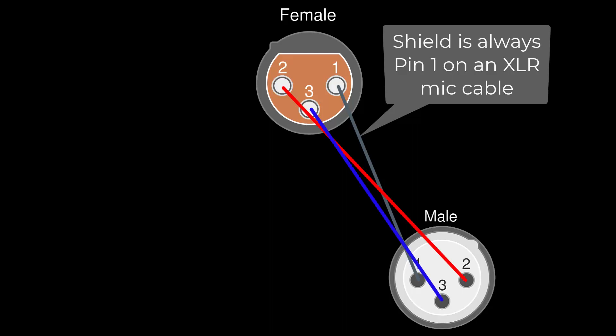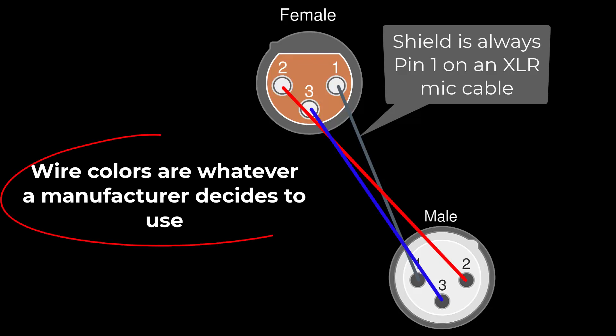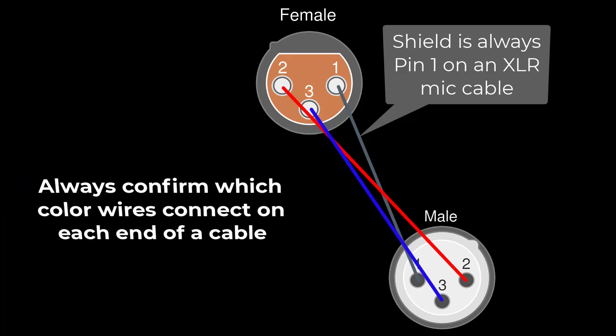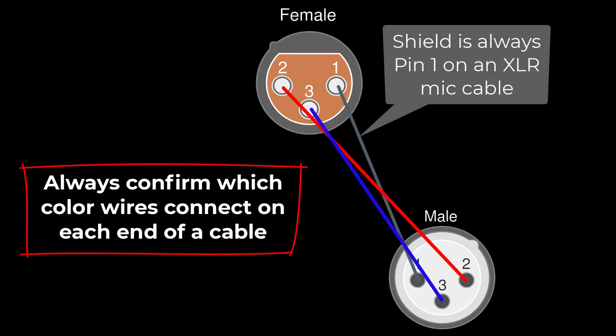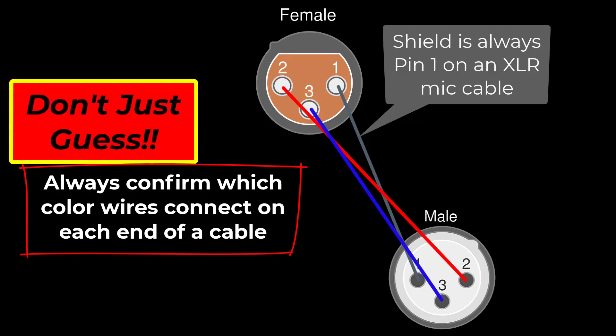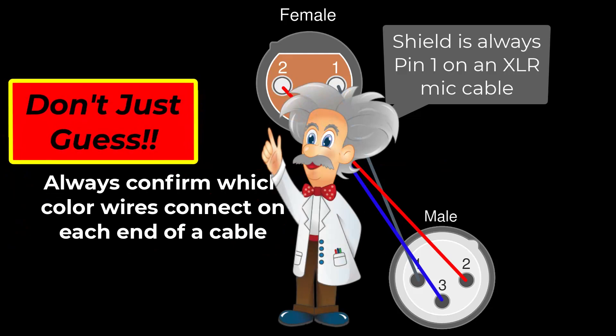There's no real rule about color coding here. There's no guarantee what color connects to the other end. Always confirm what color is used on each end of a particular mic cable. Don't assume—you don't want to make a mistake and accidentally flip the polarity.